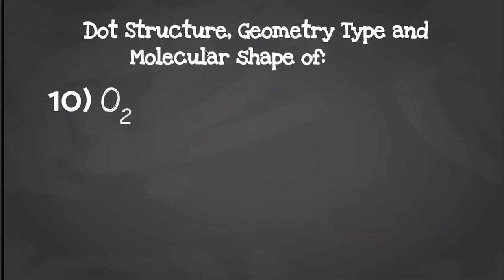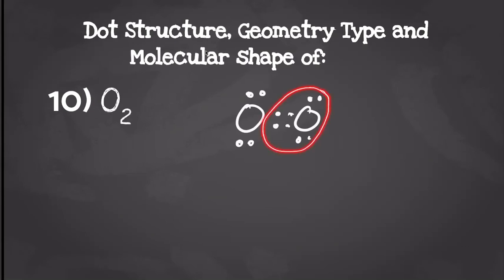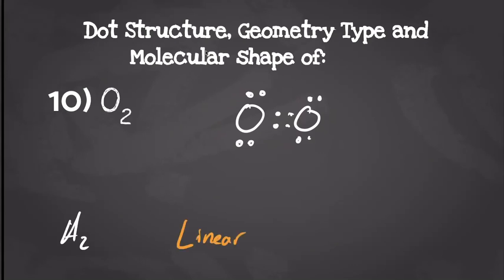Next we have an oxygen molecule. Each oxygen is going to have six valence electrons, so when we draw our dot structure it should look something like this. Each oxygen is going to be double bonded to each other, allowing it to have eight valence electrons each. Because it is diatomic, it's going to give us a geometry type of A2, which means its molecular shape is going to be linear. Each oxygen is going to pull those electrons towards it with an equal amount of strength, giving us a non-polar molecule.